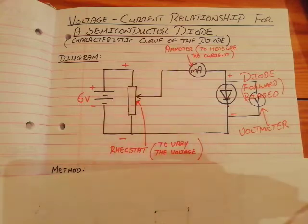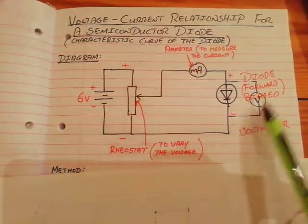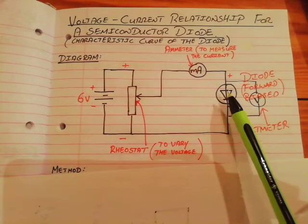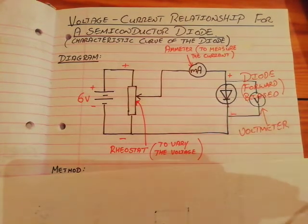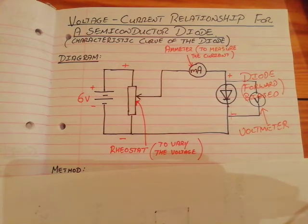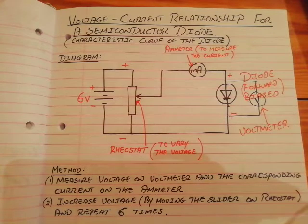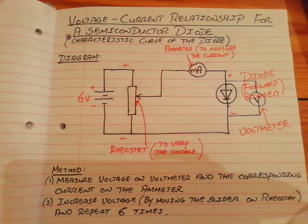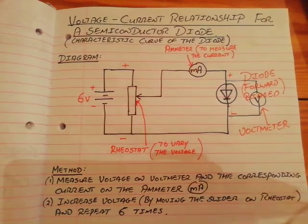Looking at this diagram for the semiconductor voltage-current relationship for a diode, it's exactly the same diagram as we've seen before for the filament bulb and the metallic conductor — only you have a diode in there, and it's forward biased. What readings do you take? Same as before: measure the voltage on the voltmeter and the corresponding current on the milliammeter.